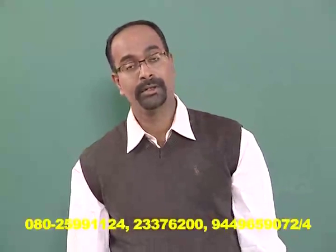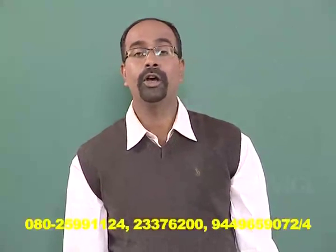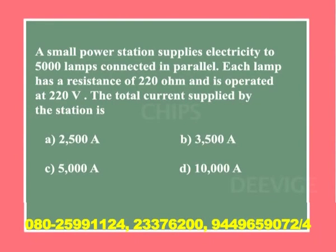Let us take up a problem based on current drawn from a power station. A small power station supplies electricity to 5000 lamps connected in parallel. Each lamp has a resistivity of 220 ohms and it is operated at 220 volts.